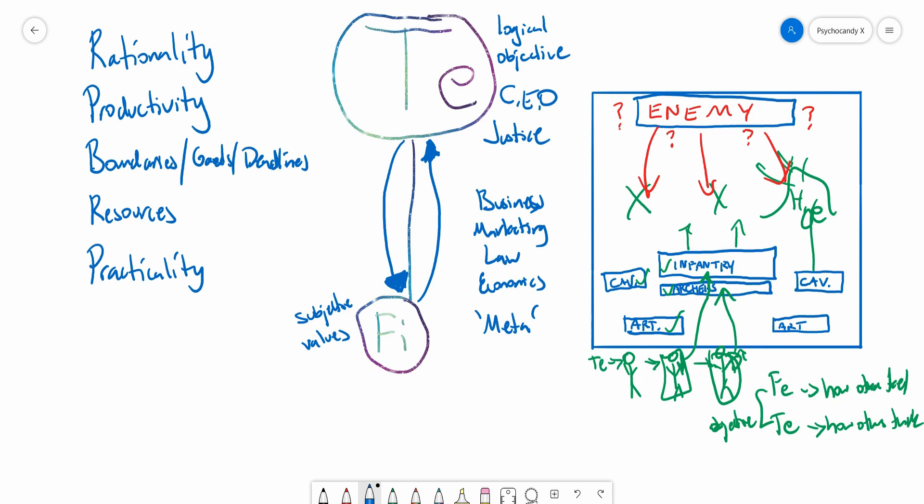And it really depends on the individual, not just the type but the individual and what they want to do in life. But as far as extroverted thinking as a function, rationality, productivity, boundaries, goals, deadlines, resources, practicality - these sorts of things will affect the mindset of the Te dom.